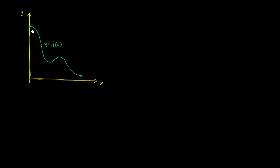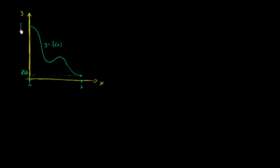I've graphed the function y equals f of x over this interval — it looks like it's between 0 and some positive value. I want to think about the maximum and minimum points on this. We've already talked about absolute maximum and absolute minimum points on an interval. We hit a maximum point right at the beginning of our interval — when x equals 0, this is the absolute maximum point. The absolute minimum point happens at the other endpoint. So if this is a and this is b, the absolute minimum point is f of b, and the absolute maximum point is f of a.